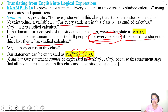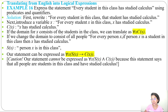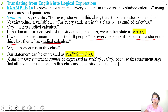Using AND would be wrong because it would say all people are students in the class and have studied calculus. But that's not given — not all people are students. For every person, if that person is a student then they have studied calculus. Using AND incorrectly means all are students and all have studied calculus, which is wrong. So for this sentence, for all x, S(x) implies C(x) is correct.